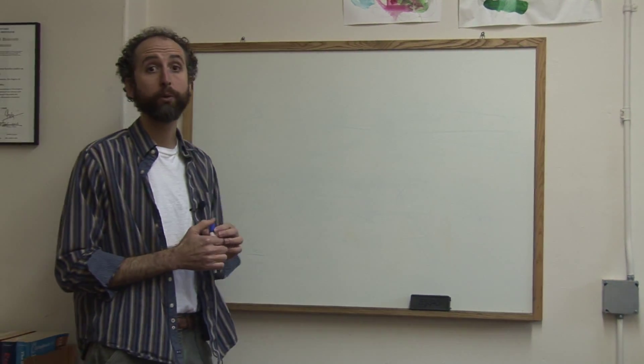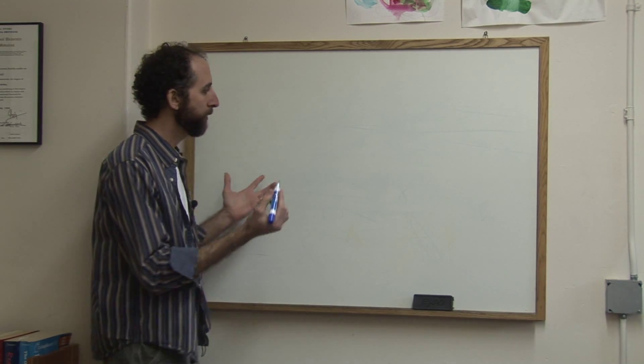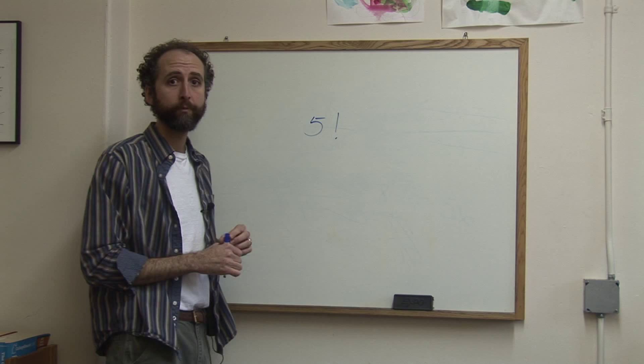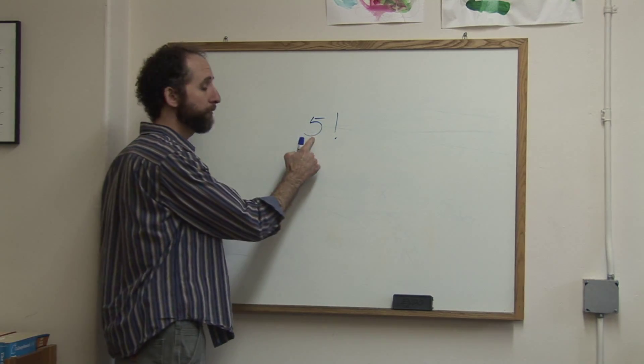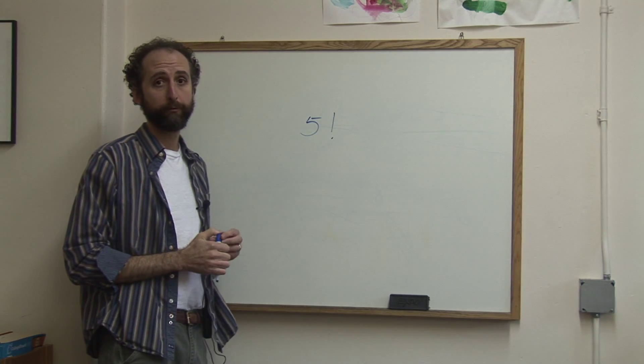So let's take a look at factorials. A lot of people get intimidated by the concept. But all a factorial means is, like if I write 5 factorial, all that means is that we're going to take 5 and multiply it by each positive integer below 5.